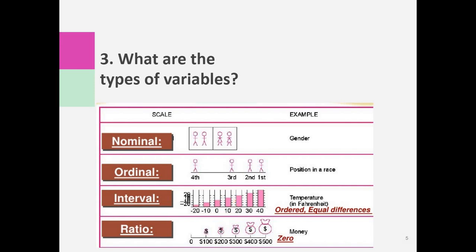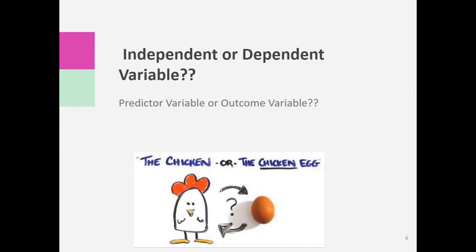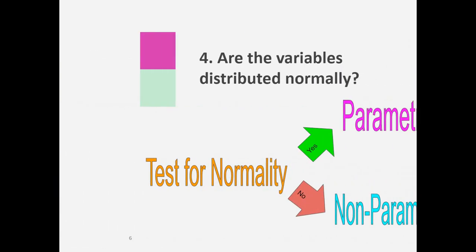We have to look at the variables and identify whether they are categorical or continuous. We also need to identify which variable is the dependent variable and which is the independent variable — otherwise known as the predictor variable and the outcome variable. For example, if you are studying antenatal care and low birth weight, low birth weight should be the outcome variable and antenatal care should be the predictor variable.